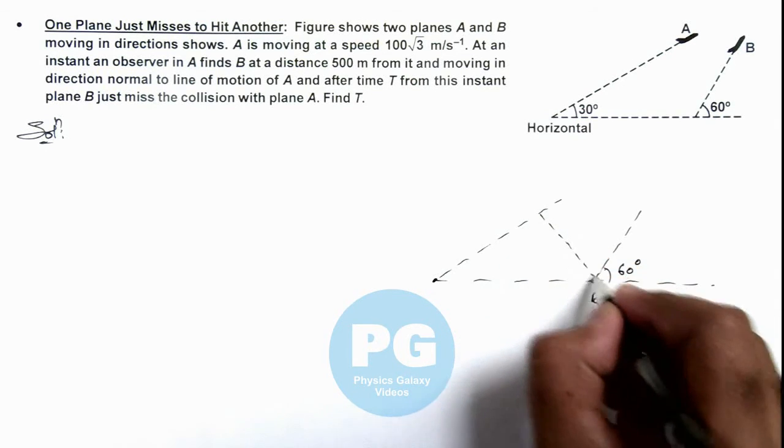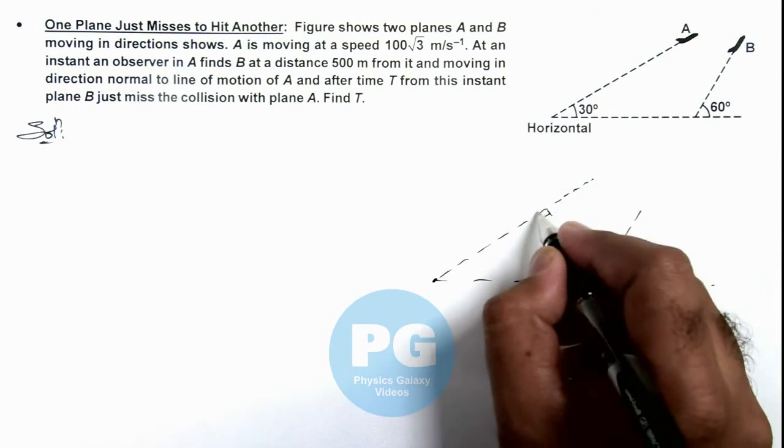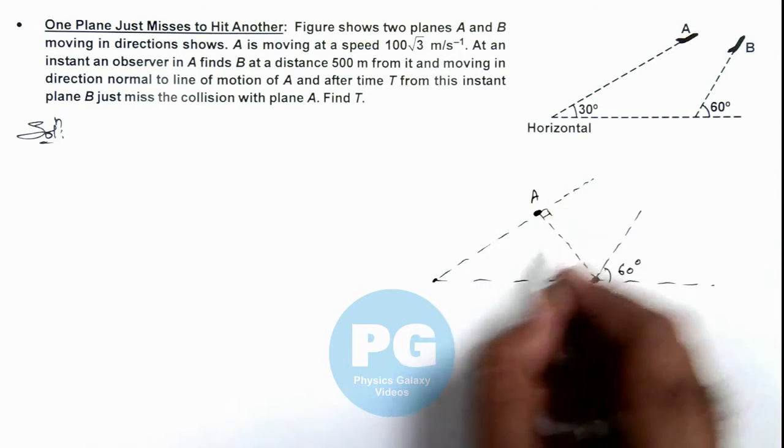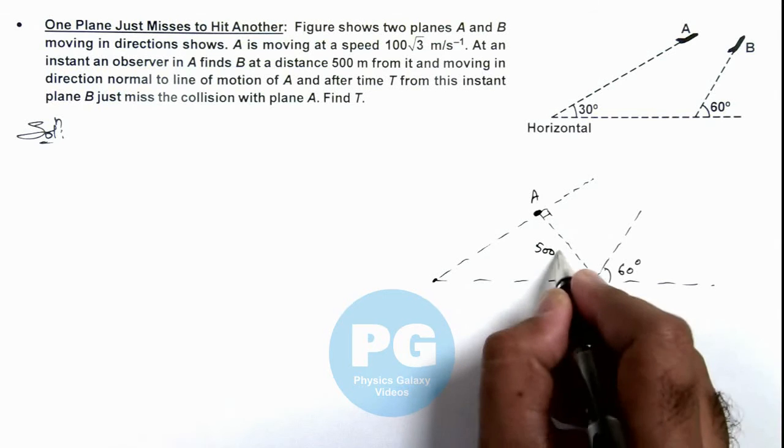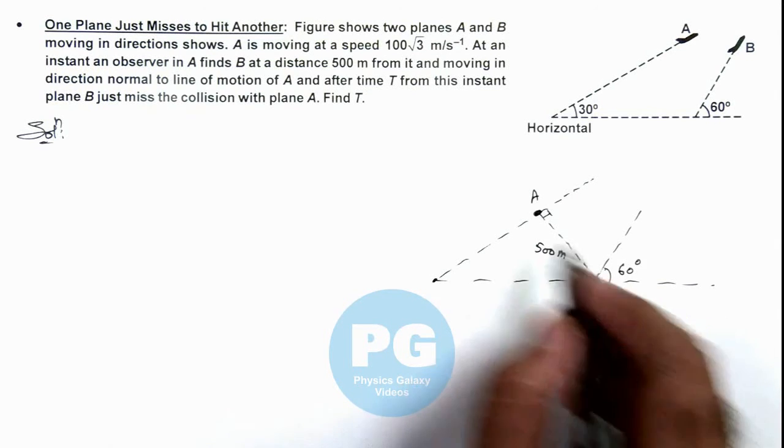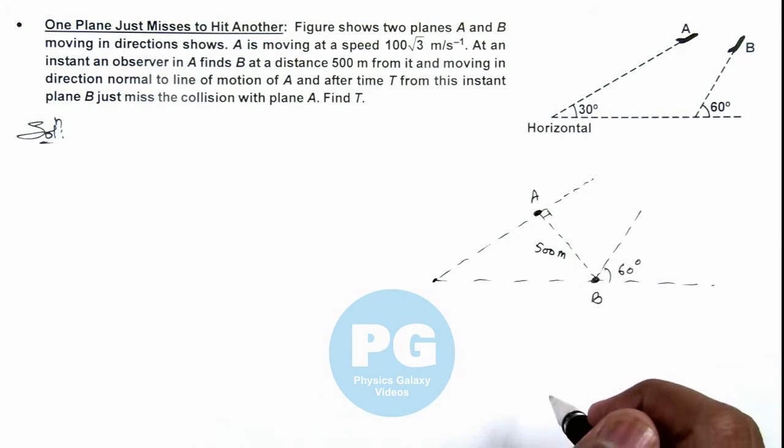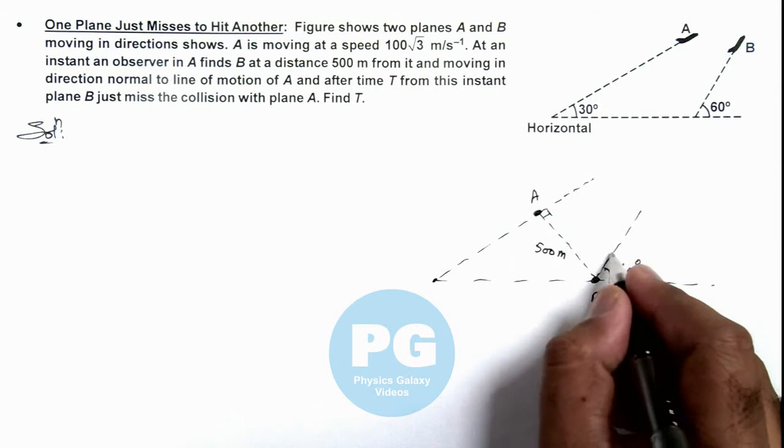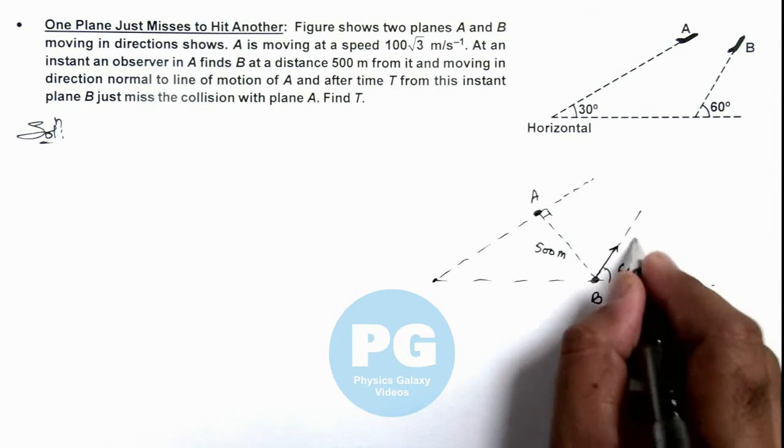And say this is a line which is normal to the direction of A, so A is located over here and this distance is observed as 500 meters by an observer in A. And B is moving in this direction with velocity vB.